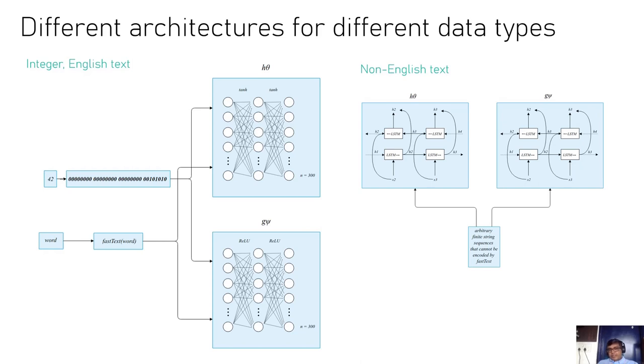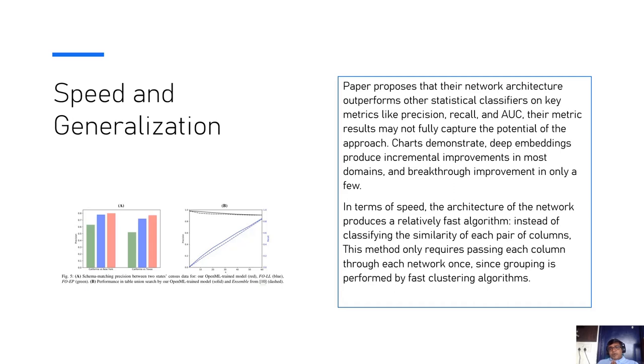Talking more about different architectures: for integer English text, you can see on the left-hand side the number 42 is converted into binary representation, the word into fast text, and then you have H and G. For non-English text, we're using the bi-directional LSTM character level. For both these cases, the accuracy and validation seems to be in the range of 80 to 90 percent. The paper proposes that their network architecture outperforms other statistical classifiers on key metrics like precision, recall, and AUC. In terms of speed, the architecture produces relatively fast algorithm. The place where it's slow is in terms of non-English text, training the bi-directional LSTM along with G and H tends to be much slower.